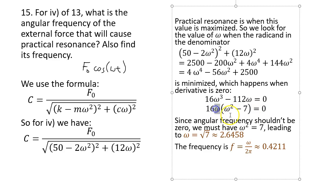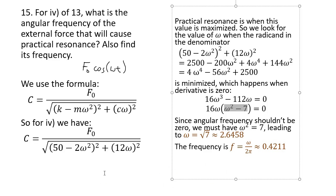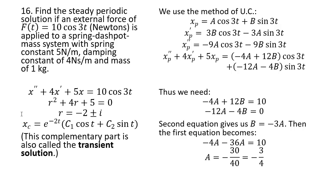Differentiating gives ω = 0 or ω² - 7 = 0. We discard ω = 0 since it means no oscillation — at ω = 0 there is actually a relative maximum, not resonance. Setting ω² = 7, and taking the positive root gives ω ≈ 2.6458 rad/s. The frequency of practical resonance is ω/(2π) ≈ 0.4211 Hz.